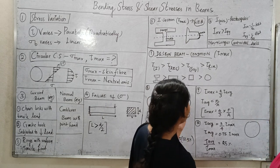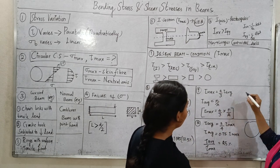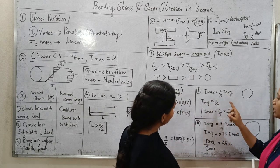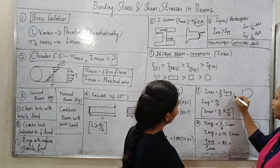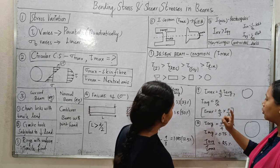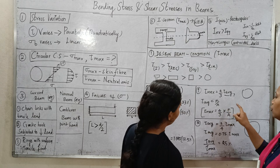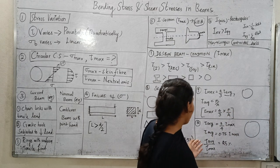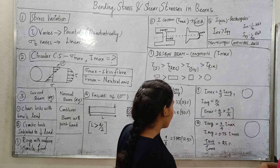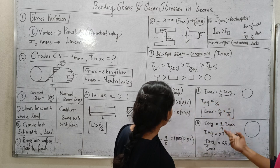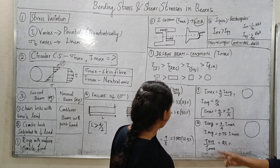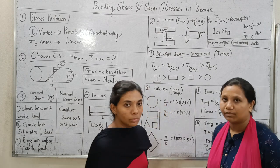Next one is tau max is 4 by 3. Tau max by tau average is 4 by 3. Tau average is force by area. Tau max is 4 by 3 force by area. Average to the maximum ratio is 3 by 4. 3 by 4 ratio is 0.75. Average to the maximum ratio is 0.75. Thank you.